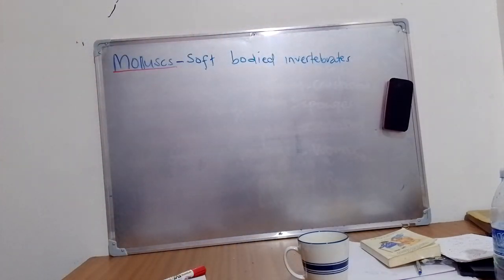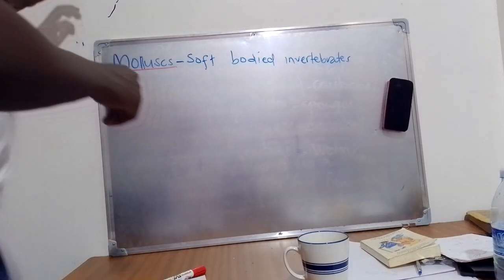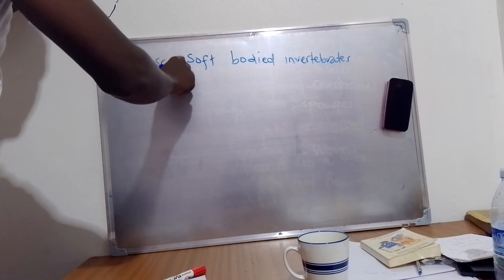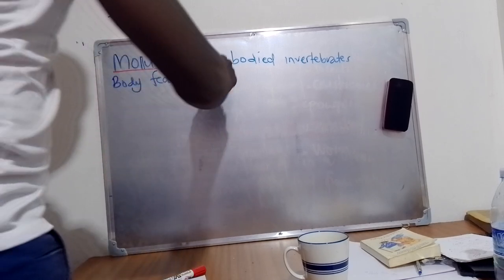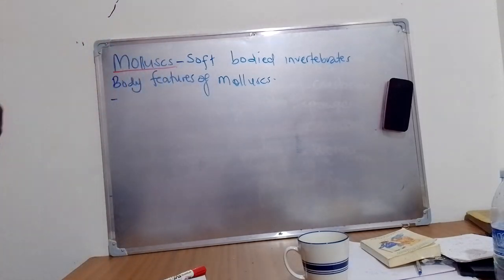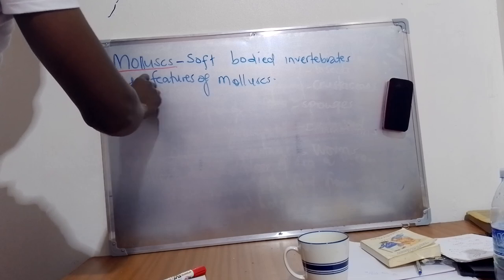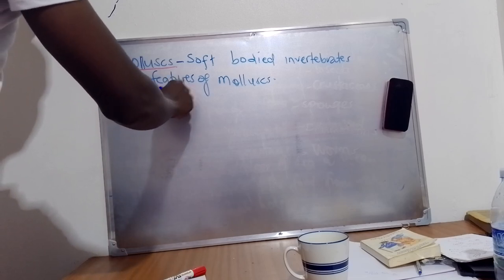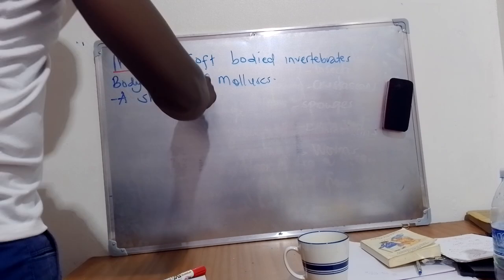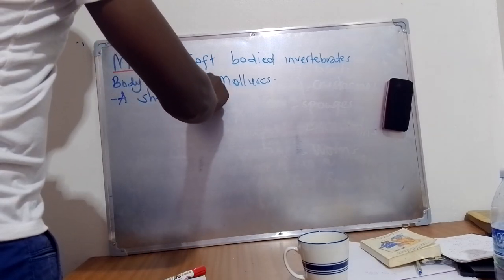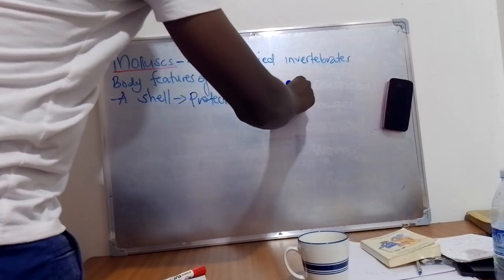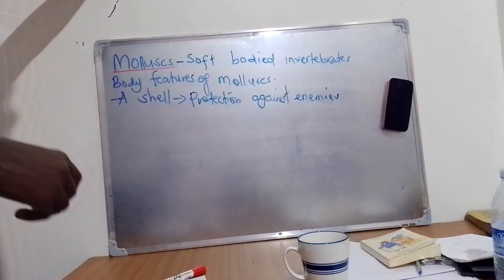Let's look at the features of mollusks. Feature number one: mollusks have what you call a shell. Mollusks have a shell that protects them from enemies — for protection against enemies.